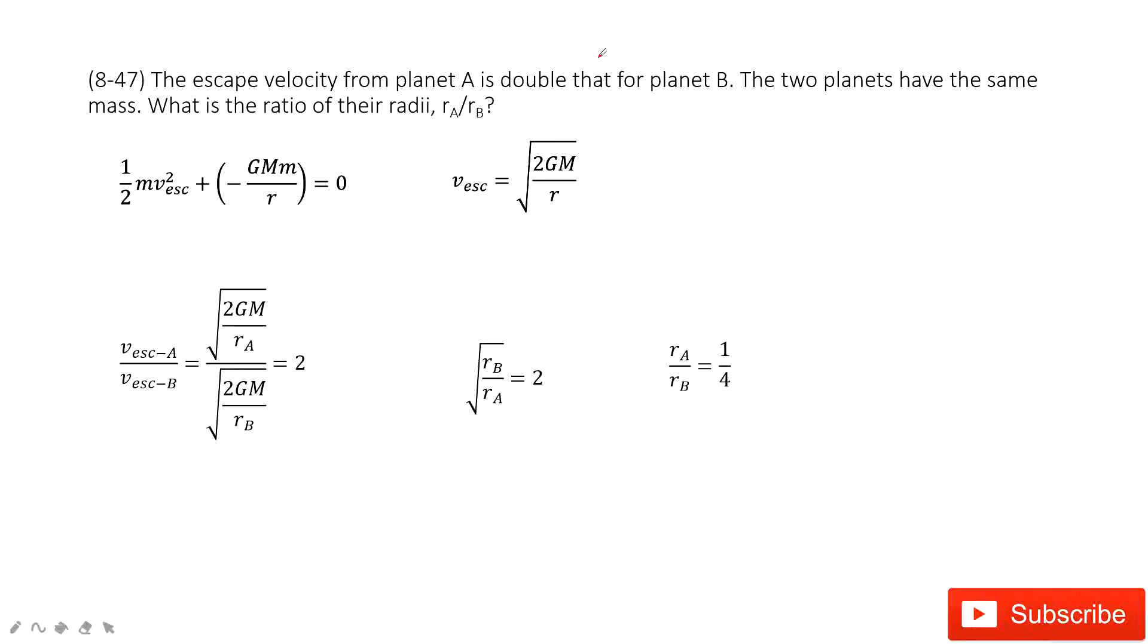So first, we need to take care about the escape velocity. What does that mean? That means at this point, the planet cannot be held, right? So the energy for this point is zero. This is in our textbook. If you're not familiar, you can check the textbook for this function. That means the kinetic energy plus the potential energy equals zero.